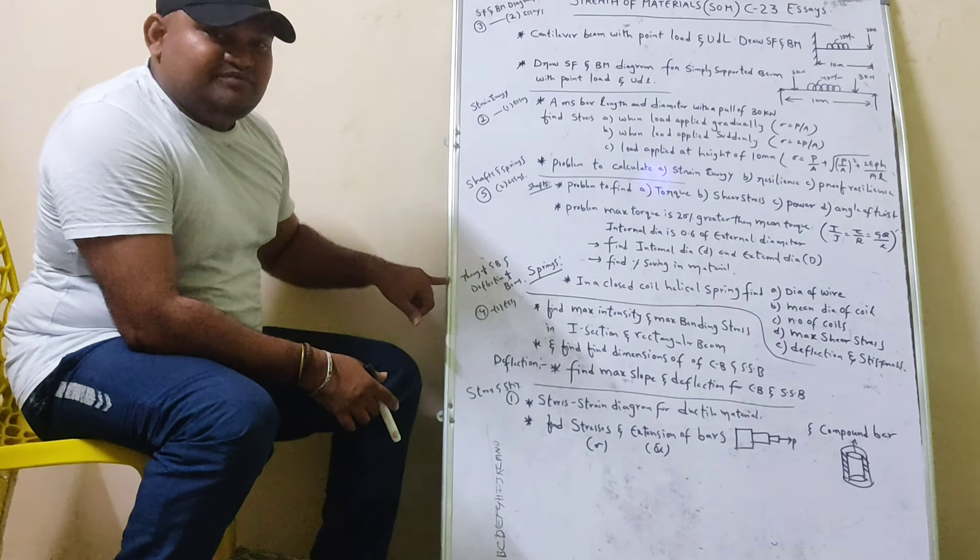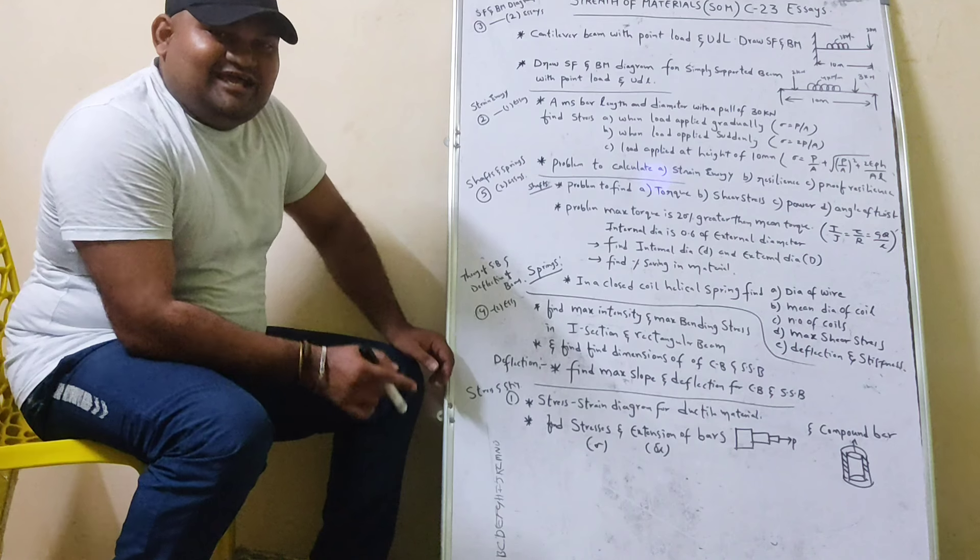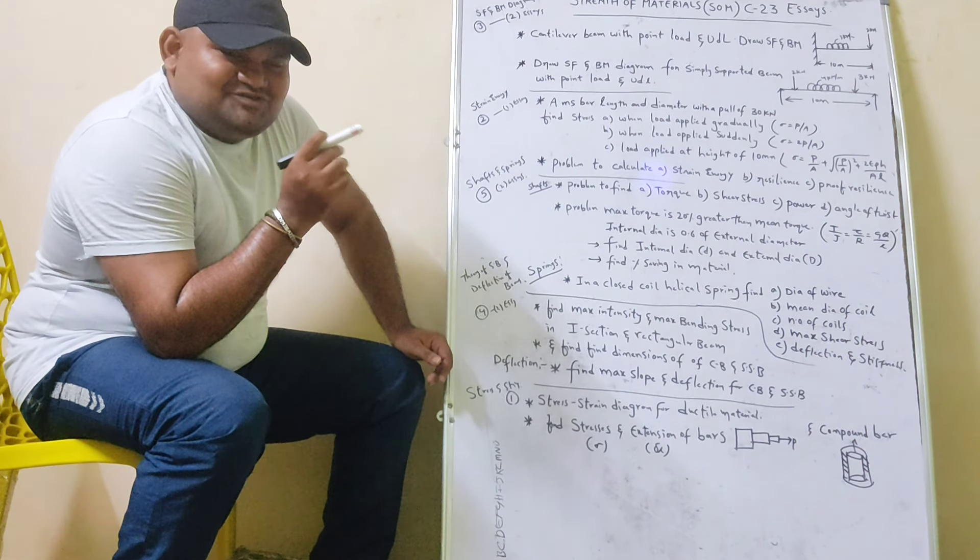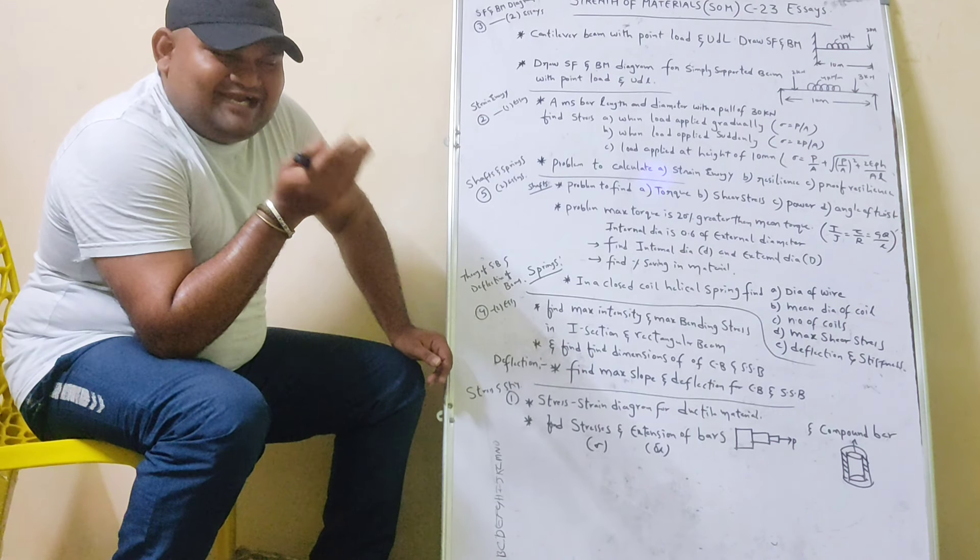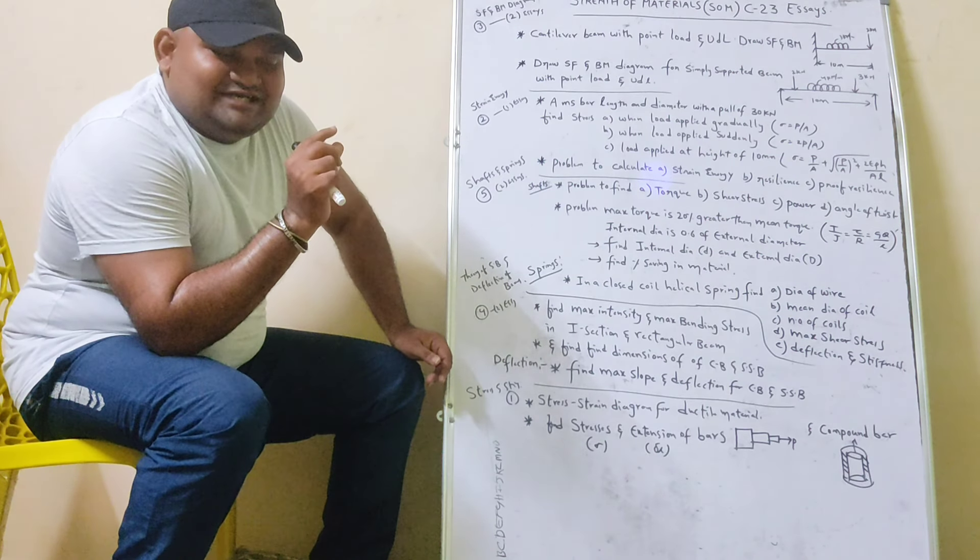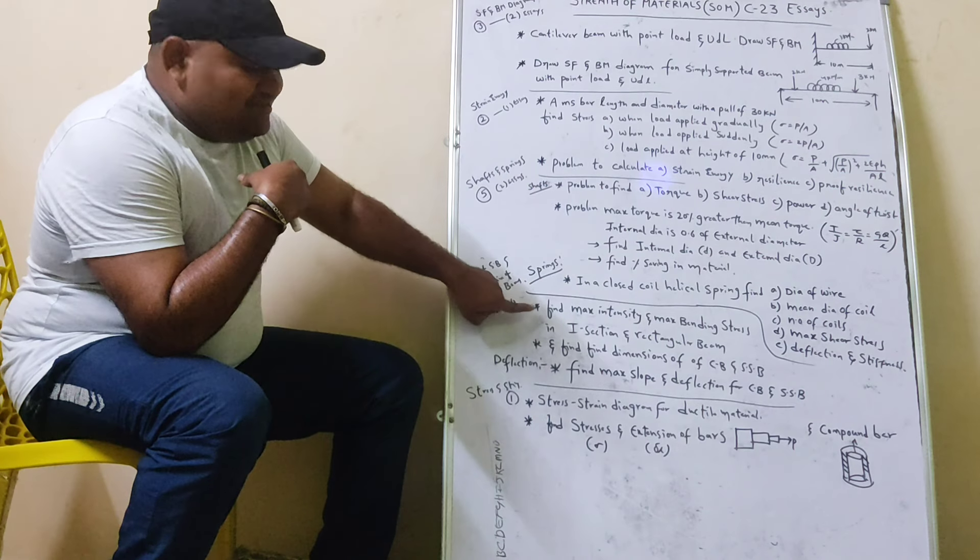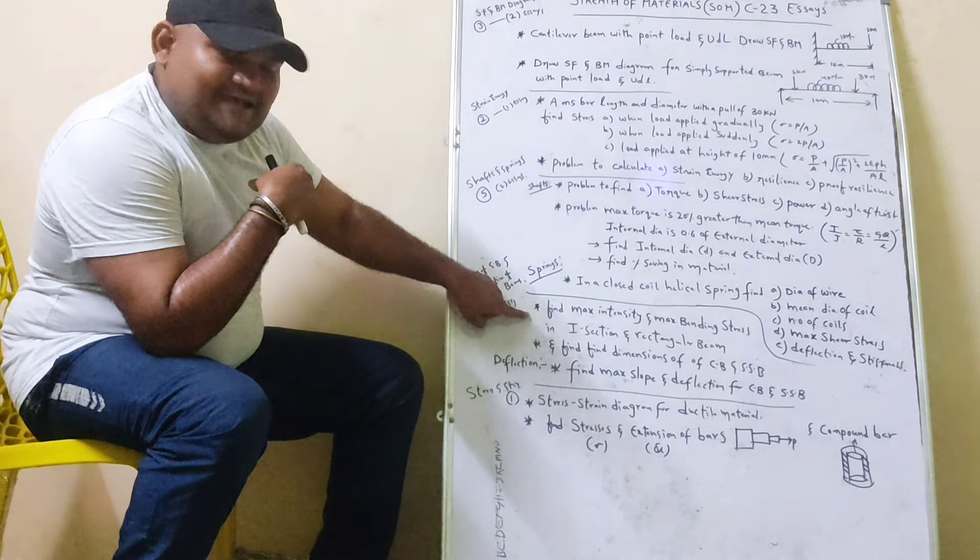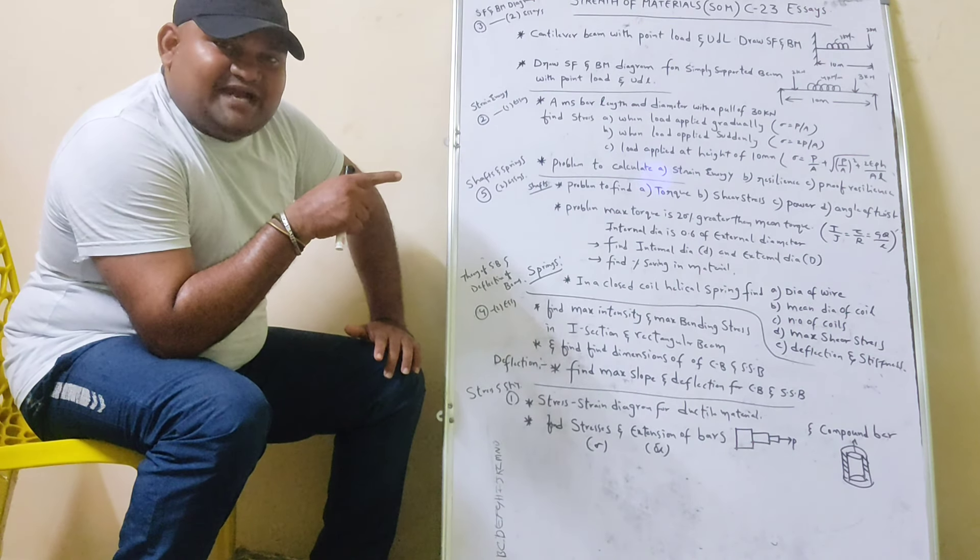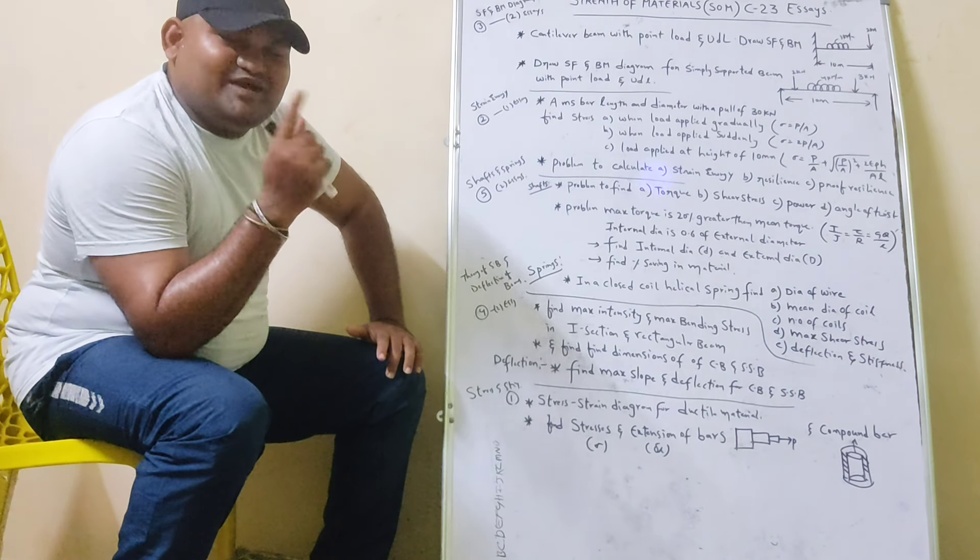In this 3 of simple bending, we have to do the deflection. Maximum deflection and maximum slope. There is a simple beam in a candle. We have to do the direct formula. If you do the simple bending, we have to do the deflection. We have to do the six formulas. If you practice that, we can substitute that.